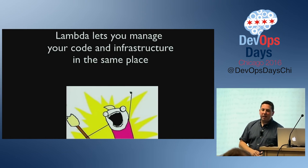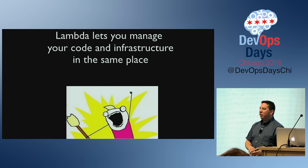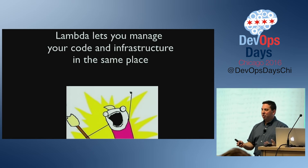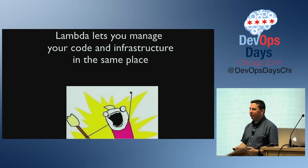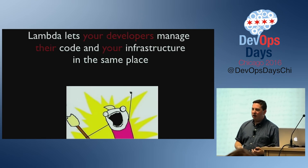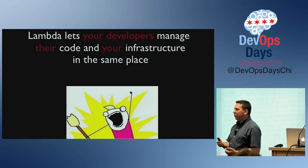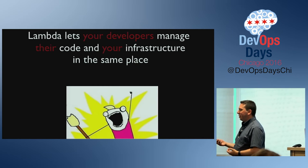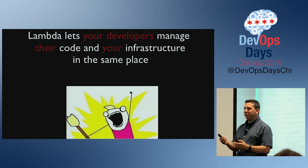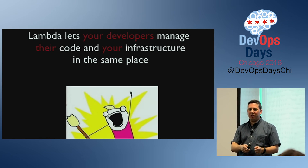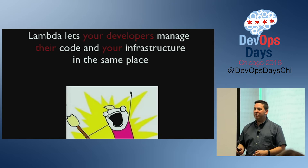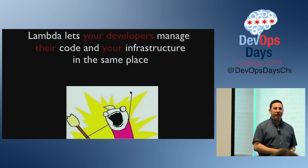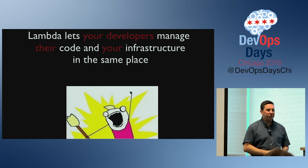Lambda lets you manage your code and your infrastructure in one place. Or, if you're the person who's asked to actually manage that stuff, it means your developers get to manage your infrastructure and do whatever they want to it without you really having any control over it.